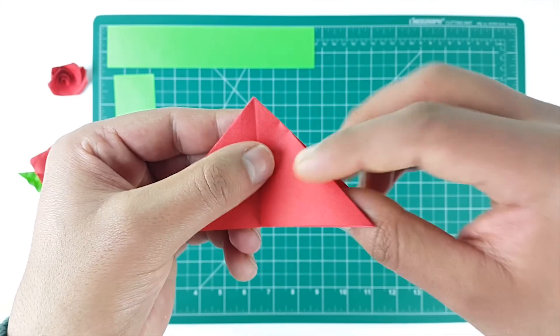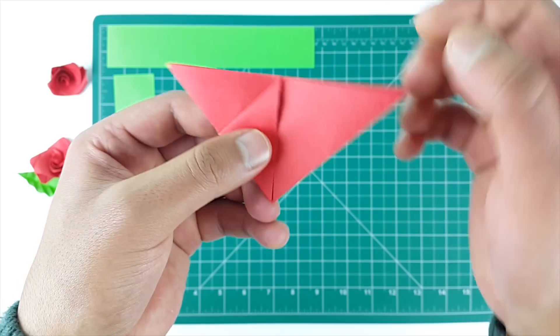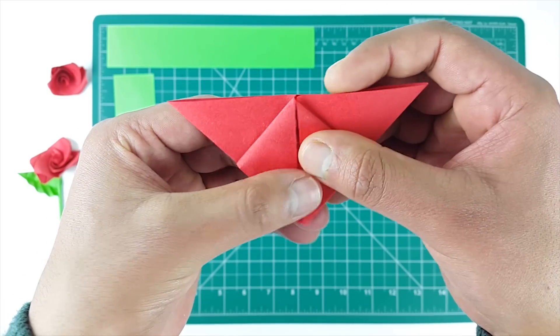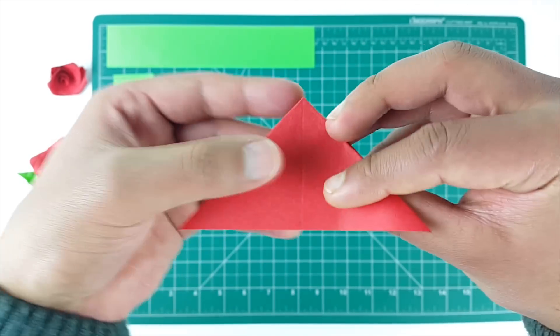Now pick this edge and fold it like this. Repeat for the other side. Turn it around and repeat again.